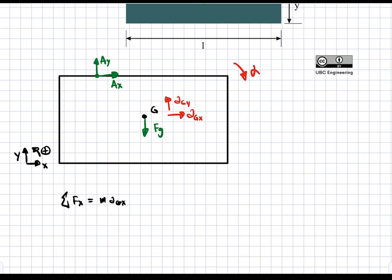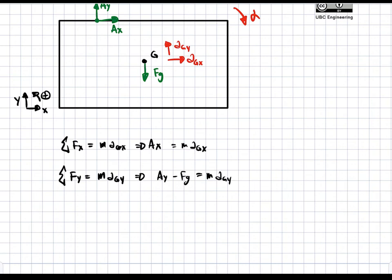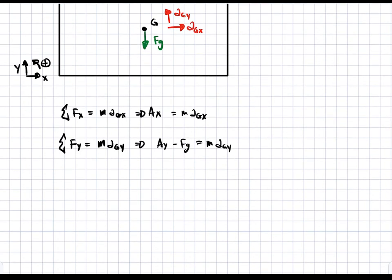So AGx equals Ax because that is the only force in the x direction. Then we have our sum of forces in the y direction which is equal to m times AGy, which gives us Ay minus Fg equals m·AGy. These are our two force balances, then we're going to move on to a moment balance about the center of gravity G, which is equal to Ig·alpha.